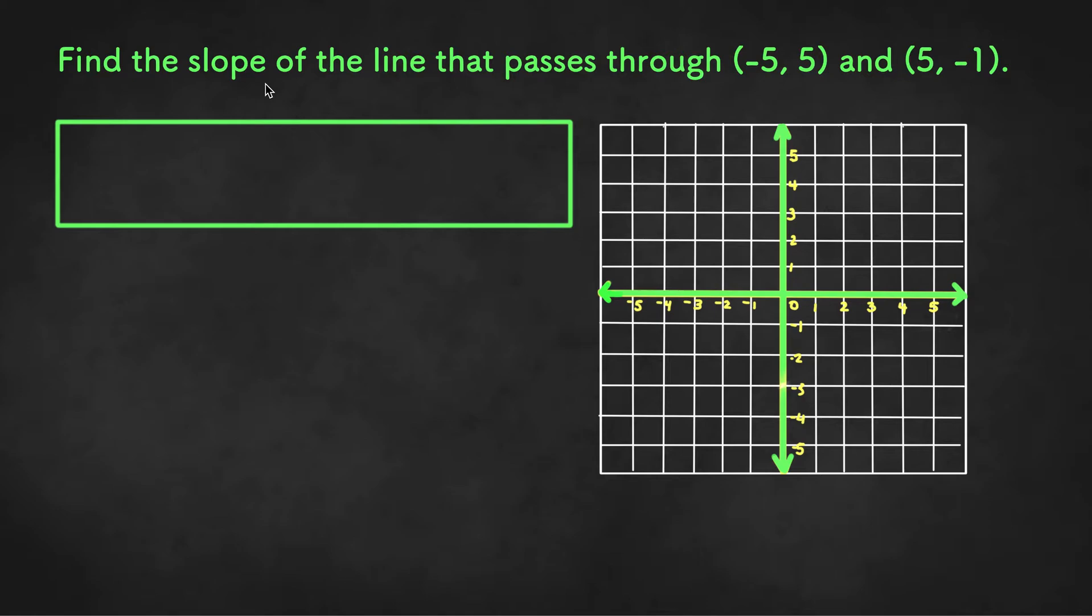So here we're asked to find the slope of the line that passes through the points negative 5, 5 and 5, negative 1.